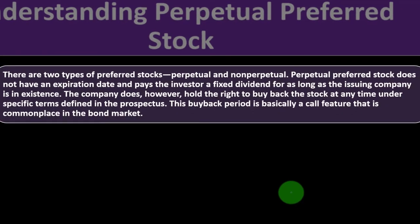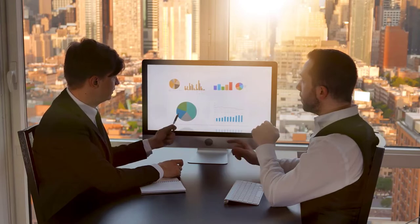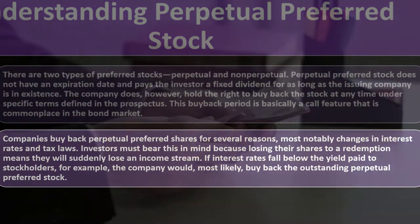Unless redeemed, issued perpetual preferred stock will pay dividends indefinitely, provided the issuer is still existent. These shares often trade on stock exchanges, similar to common stock. There are two types of preferred stock: perpetual and non-perpetual. Perpetual preferred stock does not have an expiration date and pays the investor a fixed dividend for as long as the issuing company is in existence. The company does hold the right to buy back the stock at any time under specific terms defined in the prospectus — this is essentially a call feature, commonplace in the bond market.